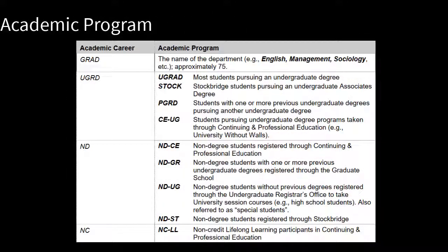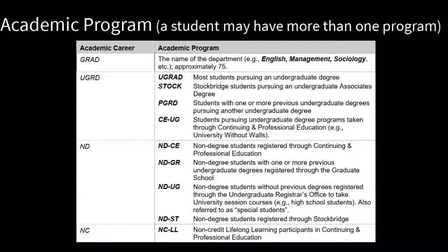Program. This term depends on what career the student is in. It usually refers to the type of degree in their area of study — for example, a Bachelor of Science degree, or an Associate's degree through Stockbridge, a Bachelor of Arts, or a Postgraduate degree. Continuing Education, or CEUG, refers to students pursuing undergraduate degrees taken through University Without Walls. A student may have more than one academic program.